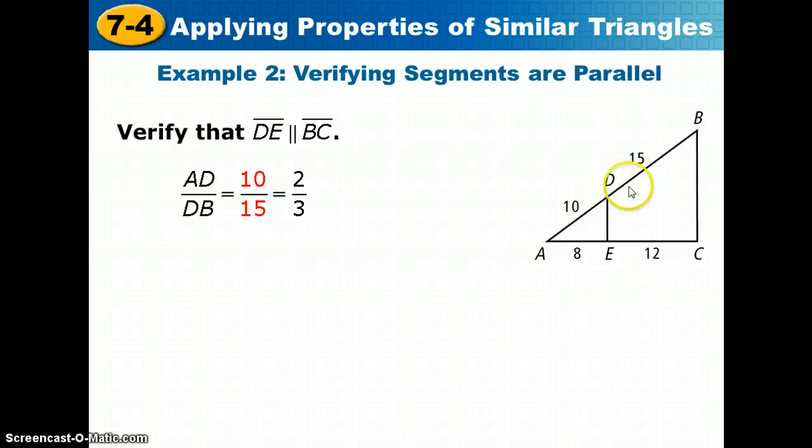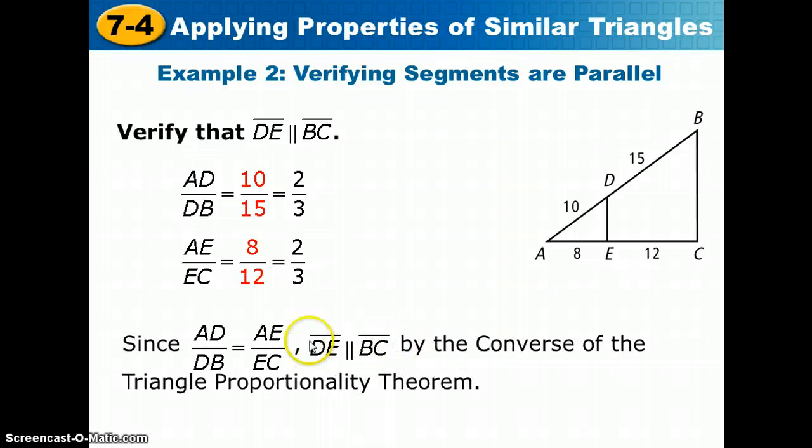Here's the proportions we can set up. I can compare AD to DB, 10 to 15, and realize that's 2 thirds. I can compare AE to EC, 8 to 12, and that is also 2 thirds. Since both parts of side AB and both parts of side AC are proportional, DE is parallel to BC by the converse of the triangle proportionality theorem.